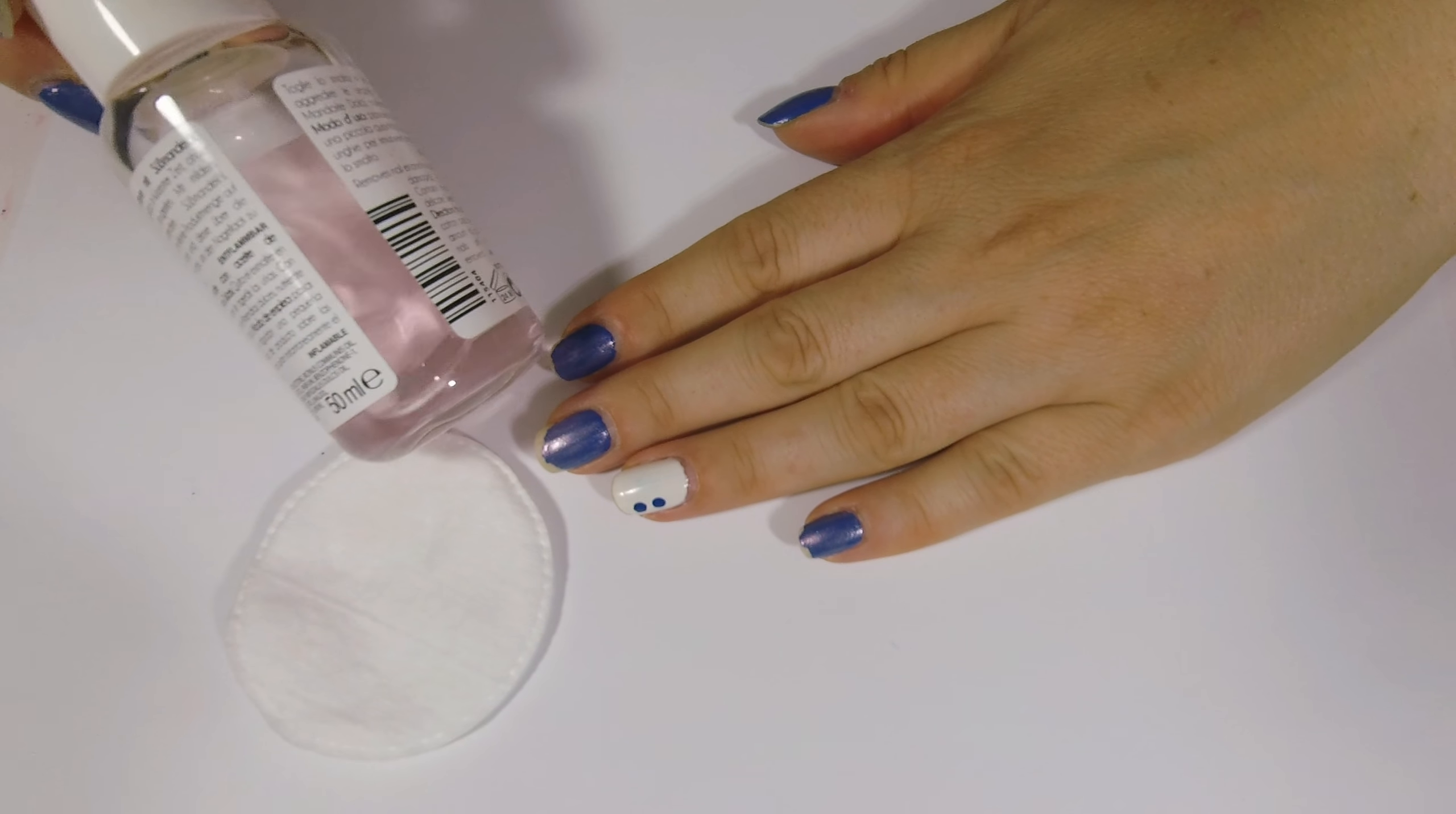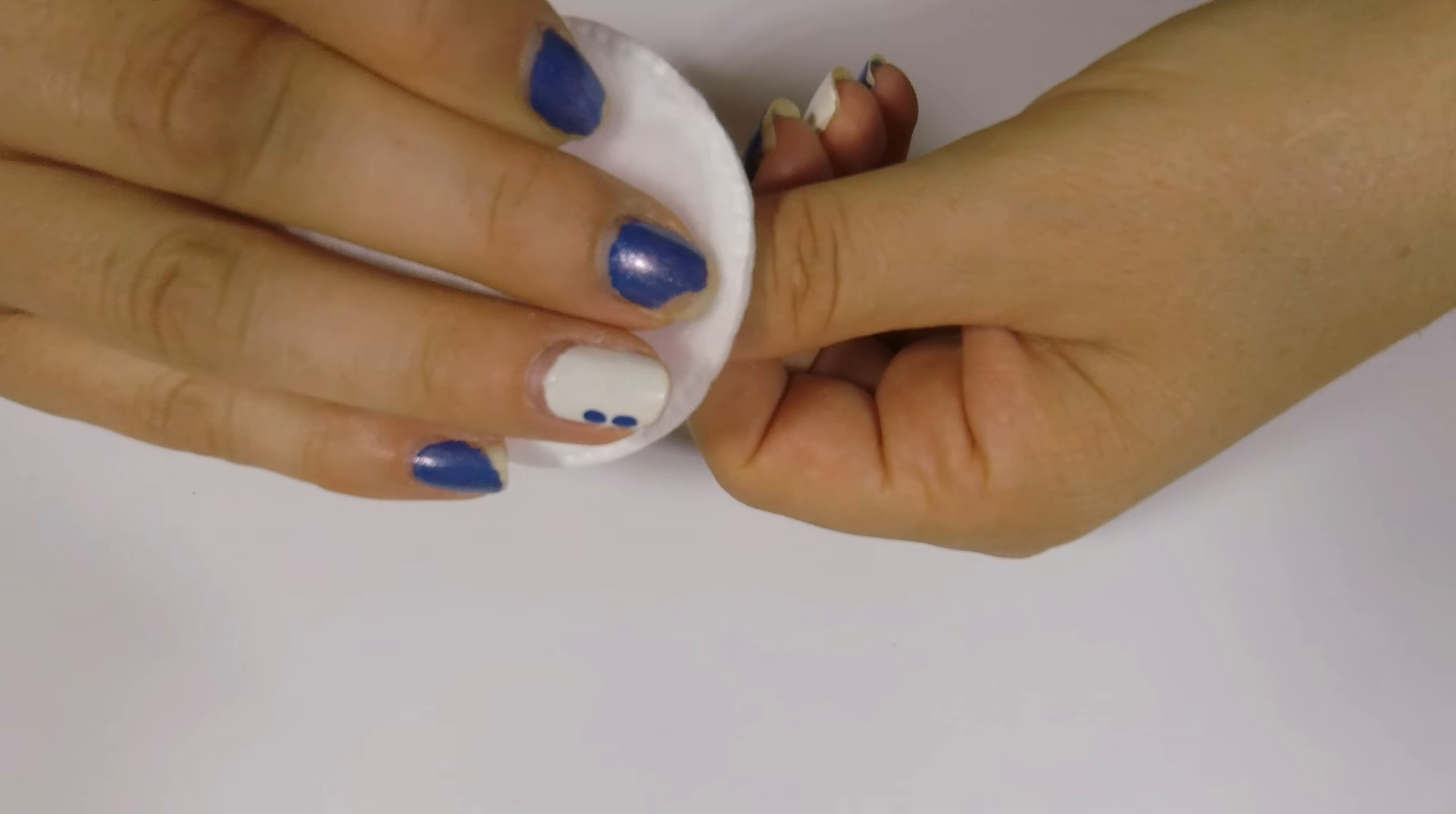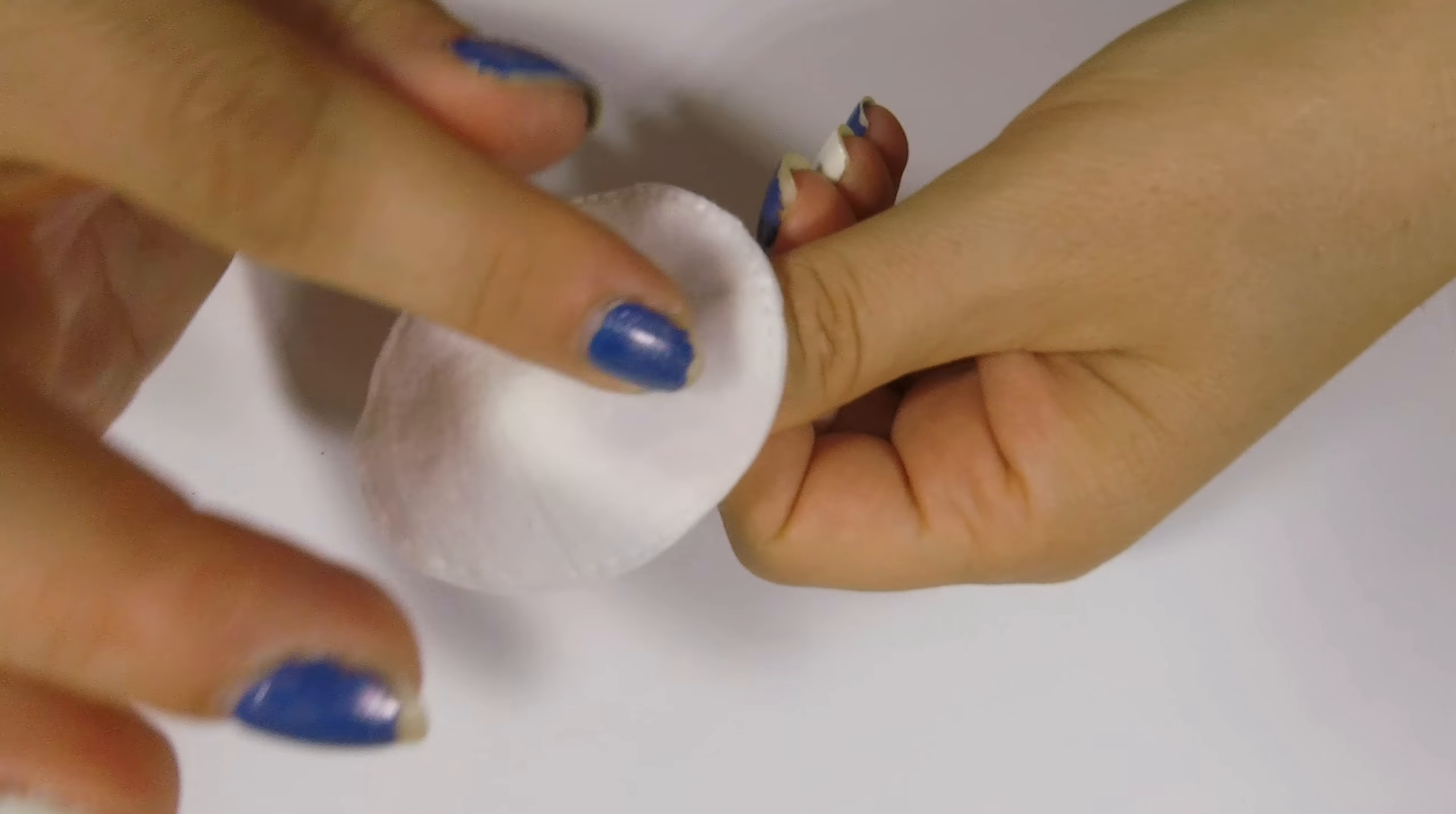Rimuovo il tutto con un dischetto di cotone imbevuto di solvente senza acetone. Questo che sto usando è quello di Lidl, travasato in una bocciata di vetro perché mi trovo più comoda.